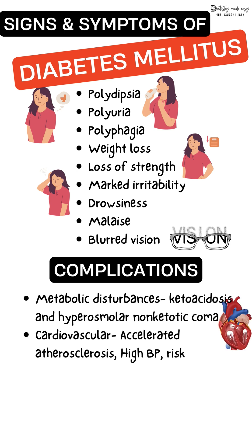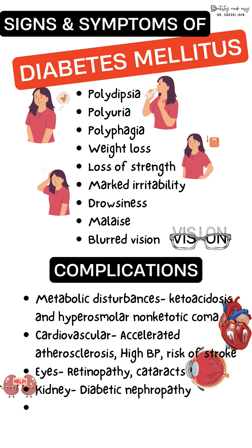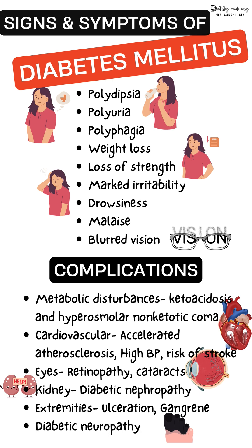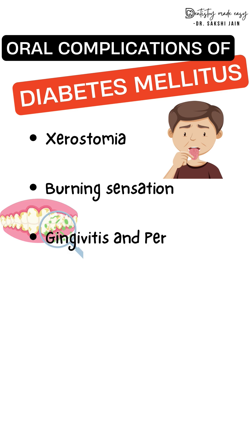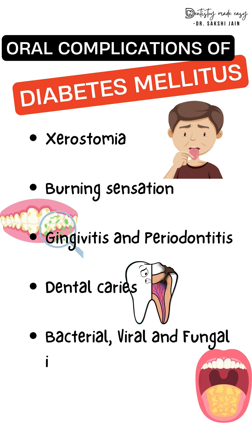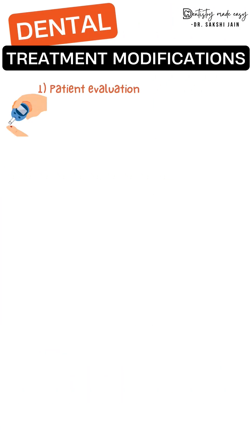Common complications include cataract, gangrene, and infections. The oral complications of diabetes mellitus include xerostomia (dry mouth), burning sensation, infection or inflammation of the gingiva, periodontitis, dental caries, various infections, and periapical abscesses.